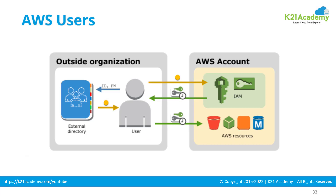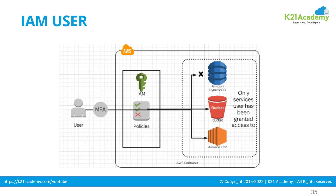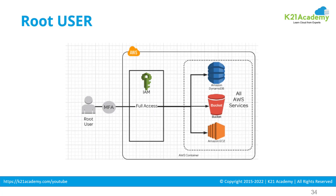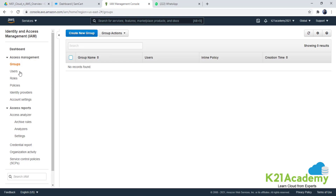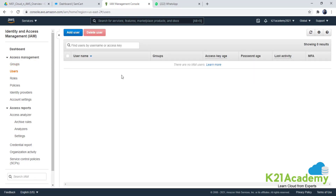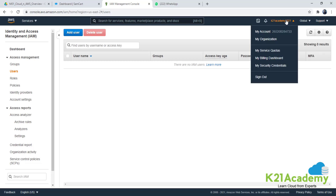A user is an identity that can access AWS resources, and you set permissions on that user. You can integrate with external directory services like Microsoft Active Directory and log in via those externally as well. In AWS, there are two types of users: root user and IAM user. The root user is created when your account is created for the first time — it's a super user that you can't delete. Let me log out to show you what I mean.